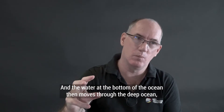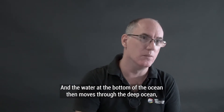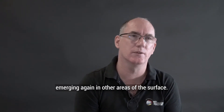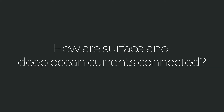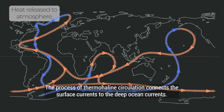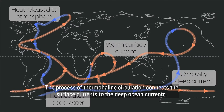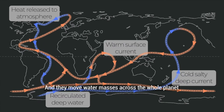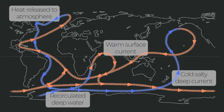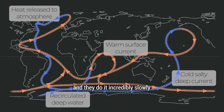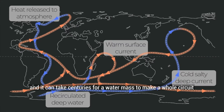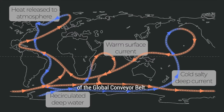The water at the bottom of the ocean then moves through the deep ocean, emerging again in other areas of the surface. The process of thermohaline circulation connects the surface currents to the deep ocean currents, moving water masses across the whole planet incredibly slowly. It can take centuries for a water mass to make a whole circuit of the global conveyor belt.